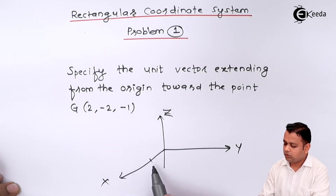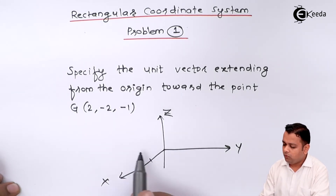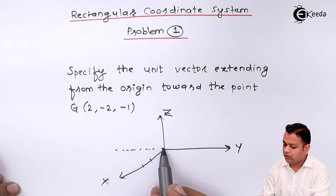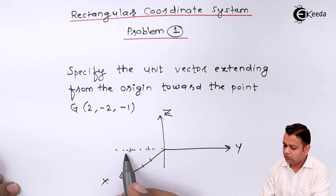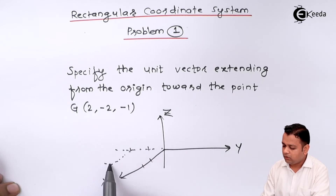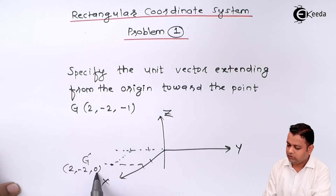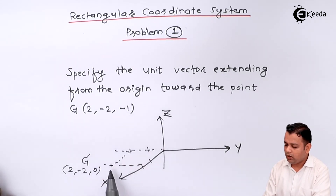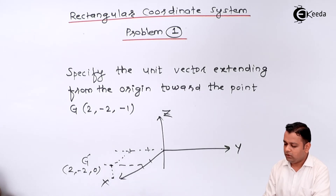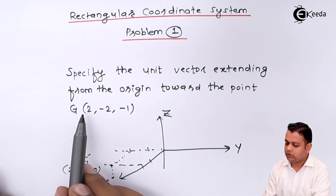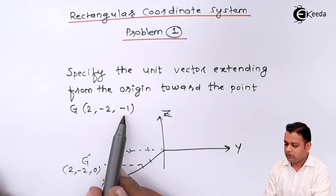I mark x equal to 2 units, y equal to minus 2, z equal to minus 1. Lines parallel to x and y intersect here, so this point is g-prime having coordinates (2, minus 2, 0). We want z equal to minus 1, so I have to lower it down by one unit in the three-dimensional space. This point will be capital G — we got the point.